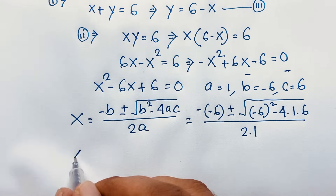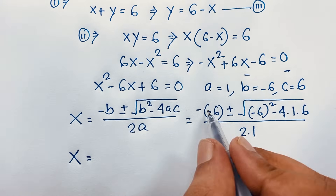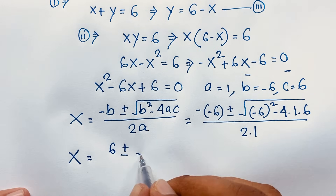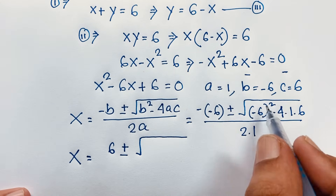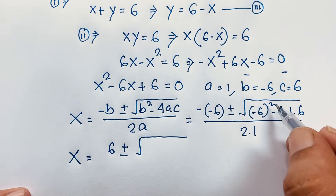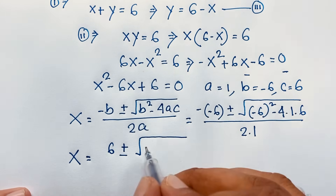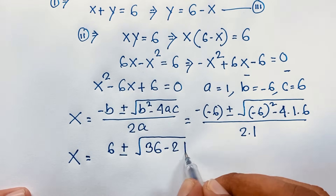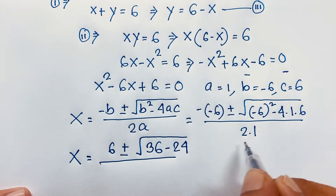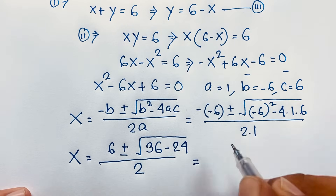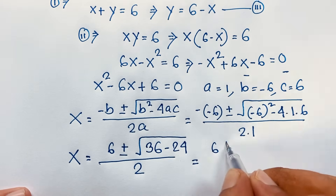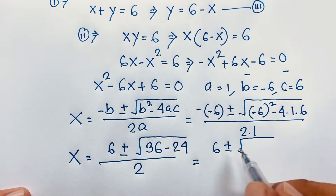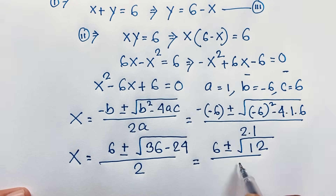Now here, x will be 6 plus or minus square root of (minus 6) whole squared, which is a positive value because the power is an even number. So it will be 36 minus 4 times 6, which is 24, over 2 times 1, which is 2. So we have 6 plus or minus square root of 36 minus 24, which is 12, over 2.